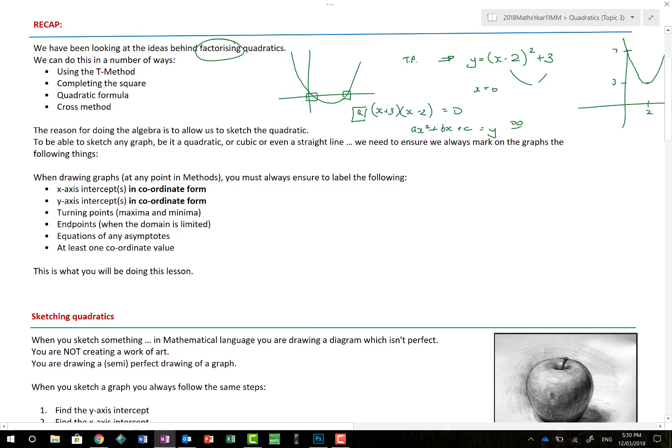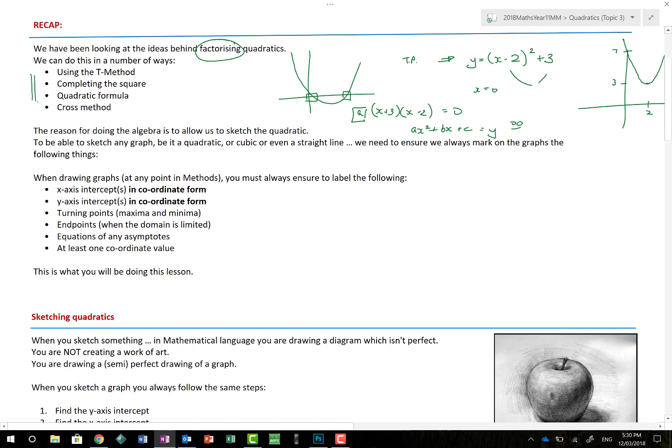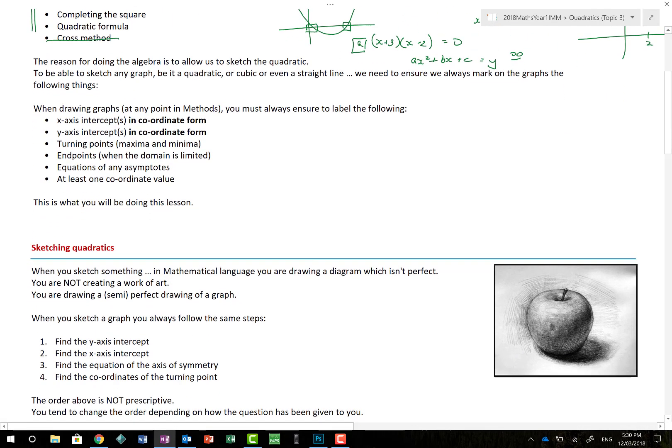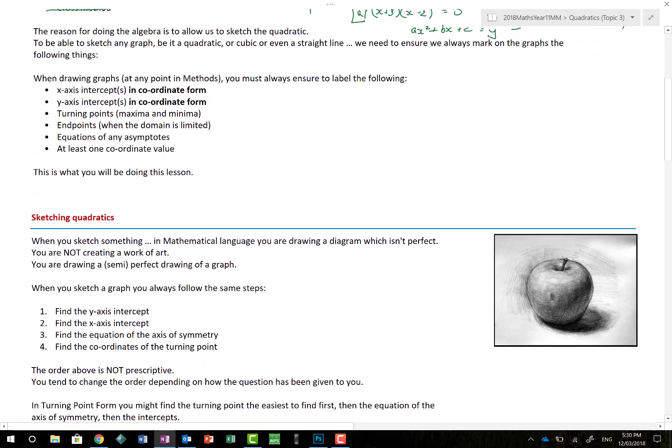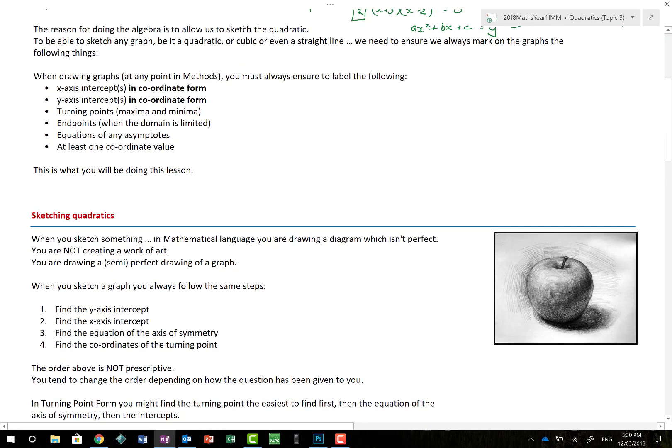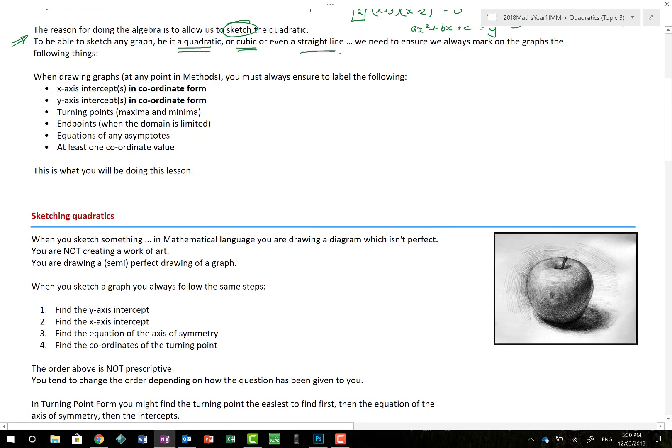Turning point form is great because it gives us so much more information. But factorising, we can use the T-method, completing the square, quadratic formula, and the cross method. Now, when we do this in algebra, we're actually using it to try and sketch your quadratic. And the exams that have coming up basically wish you to do quite a lot of sketching, in an accurate way that gives as much information as possible.